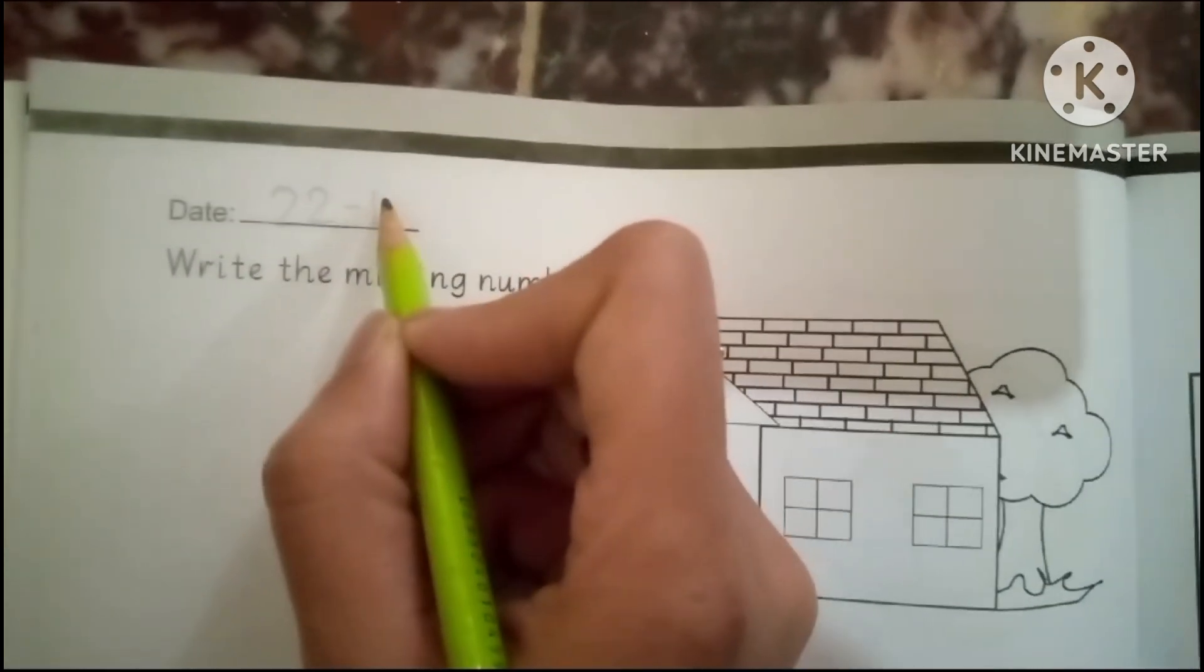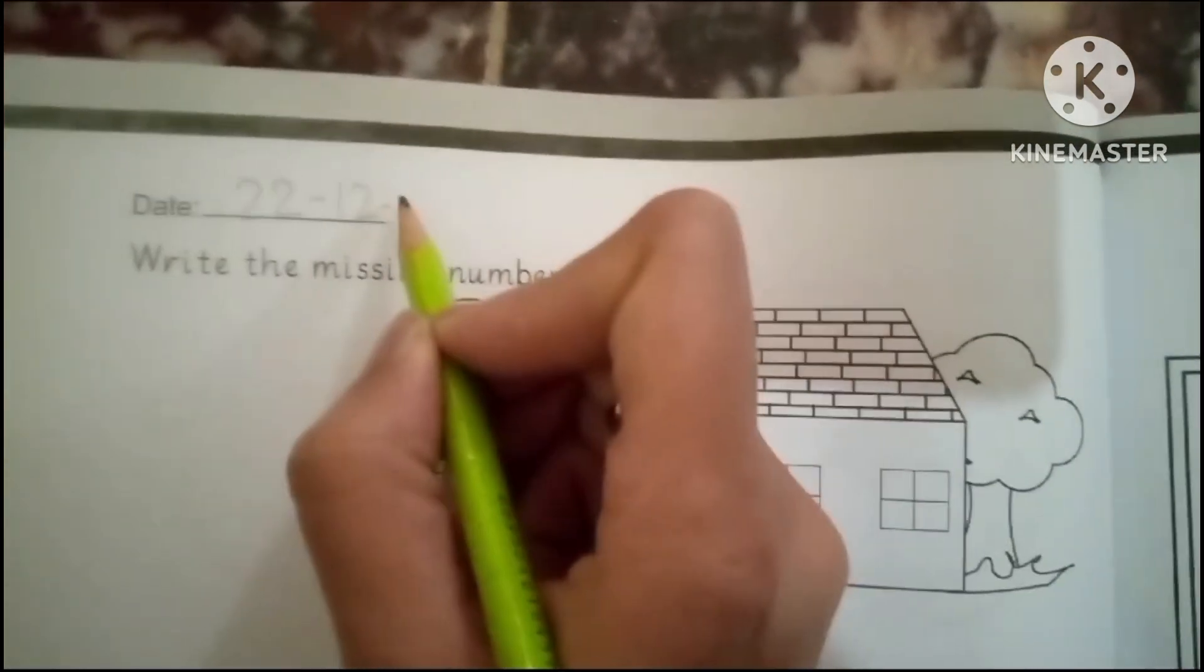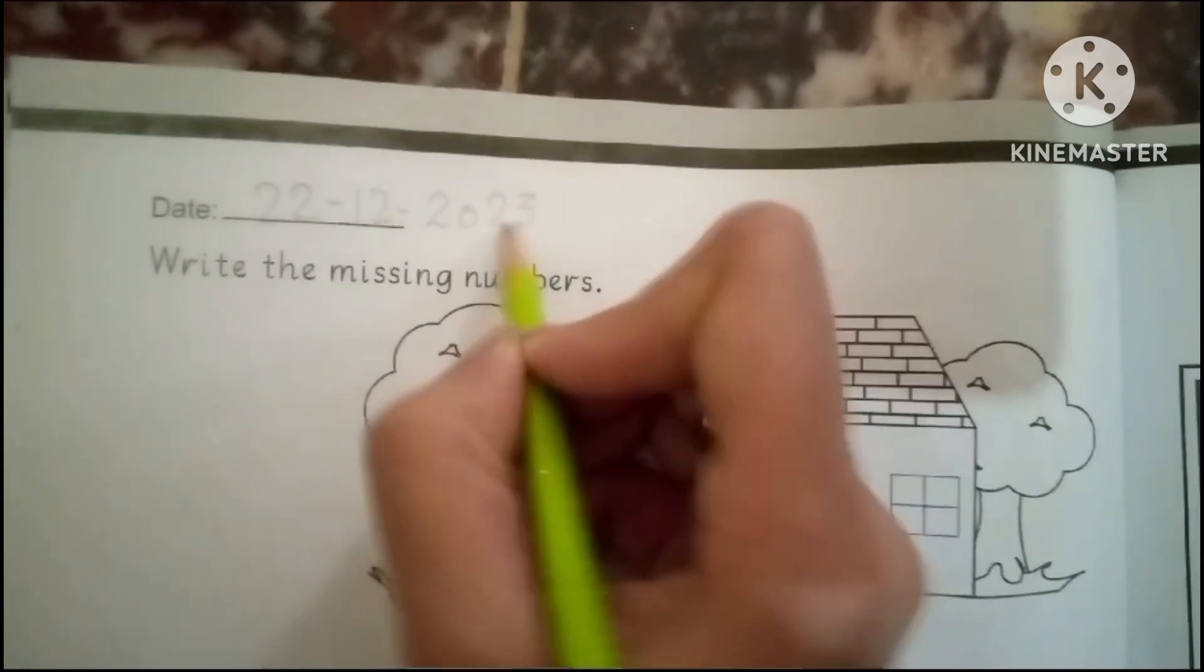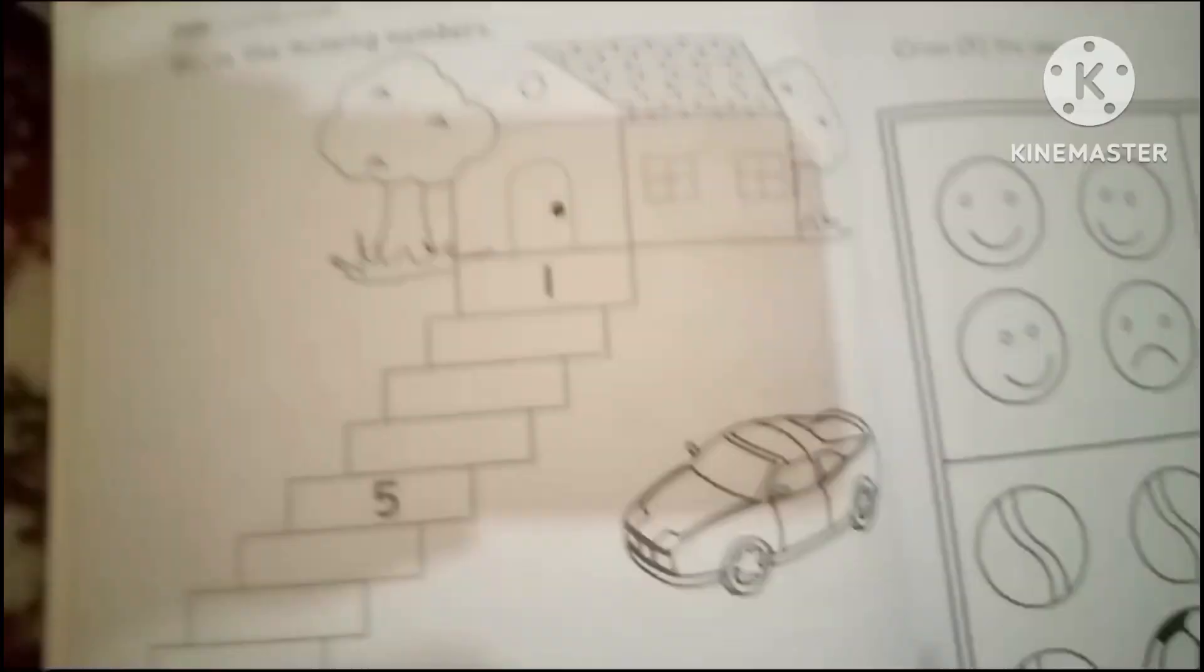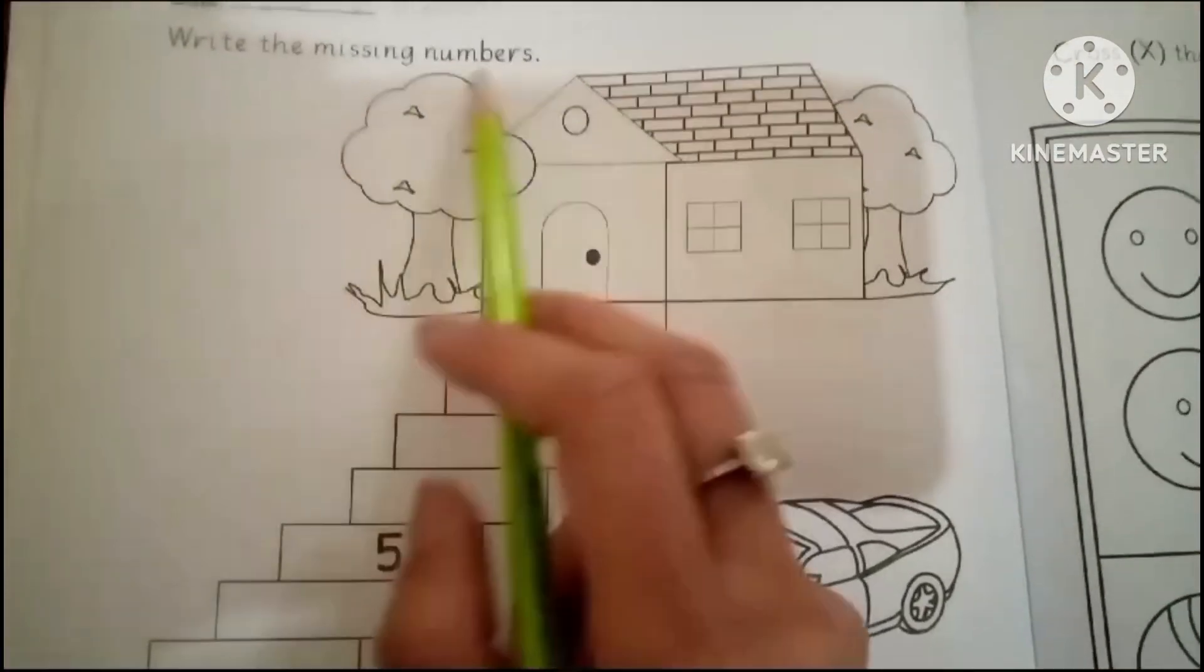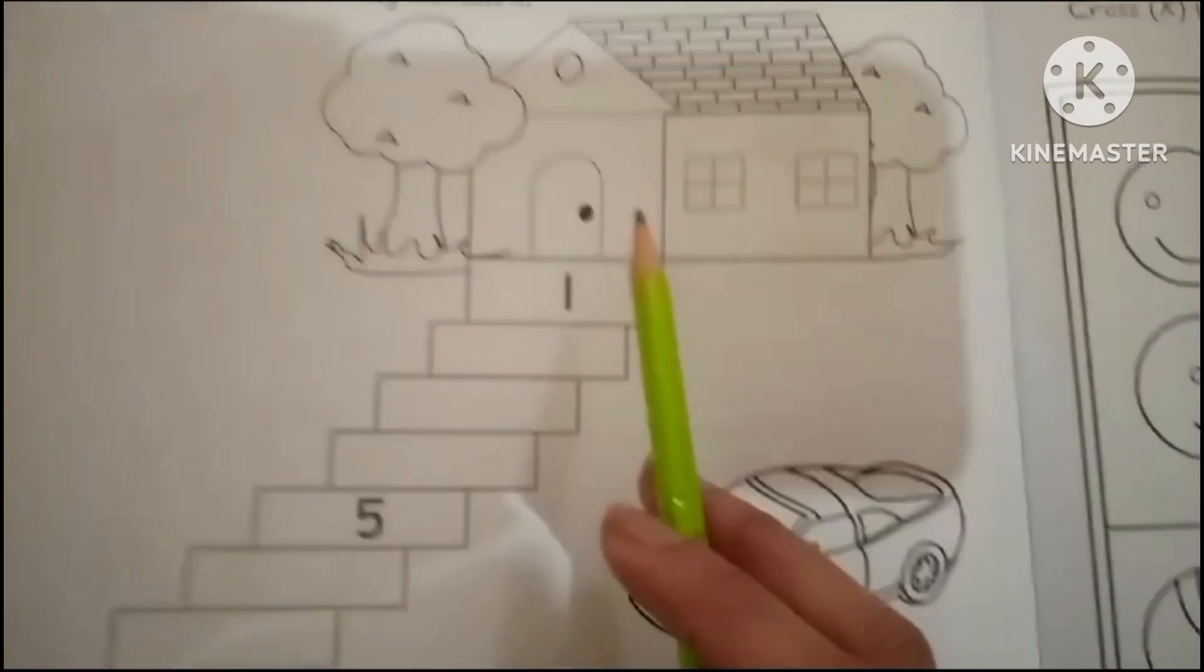Fill in the missing numbers. This is the house and the house has stairs. Let's count how many stairs are there.